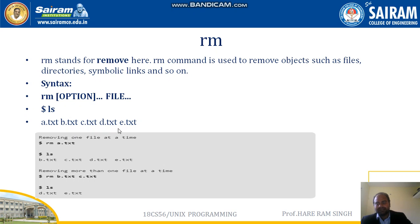To remove a file, type 'rm a.txt'. To check whether the file has been removed, run ls again. The remaining files displayed will be b.txt, c.txt, d.txt, and e.txt, confirming that a.txt has been deleted.